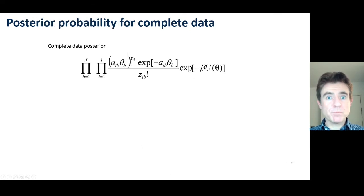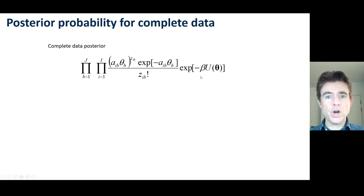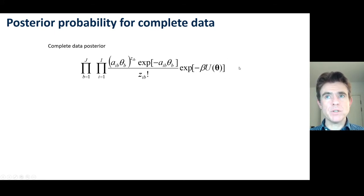Now let's build in the prior probability, based on that energy function, along with beta, which is the hyperparameter that controls the regularization strength — controlling how much attention we pay to that prior probability.